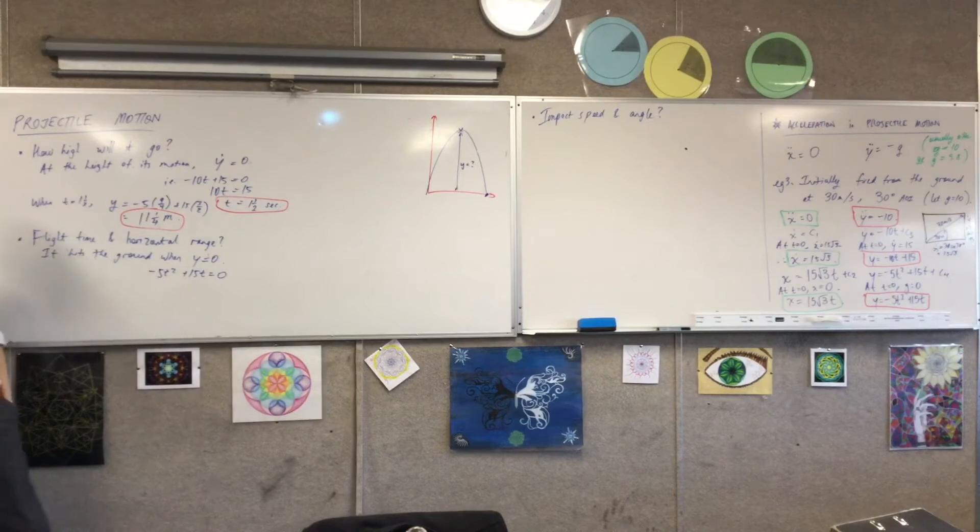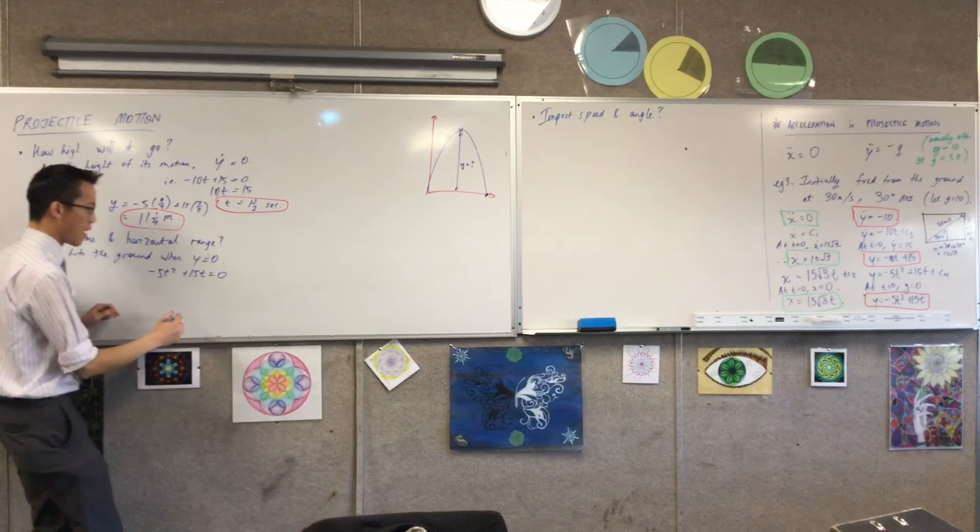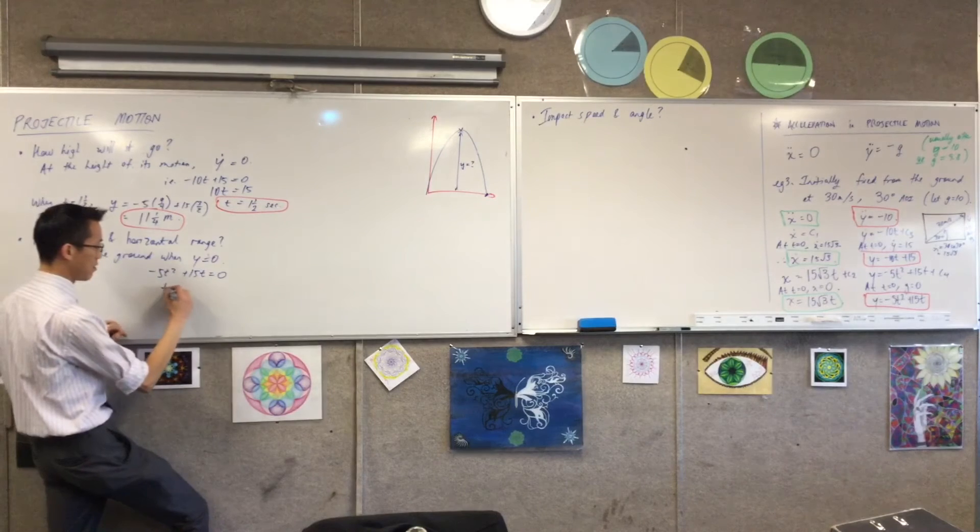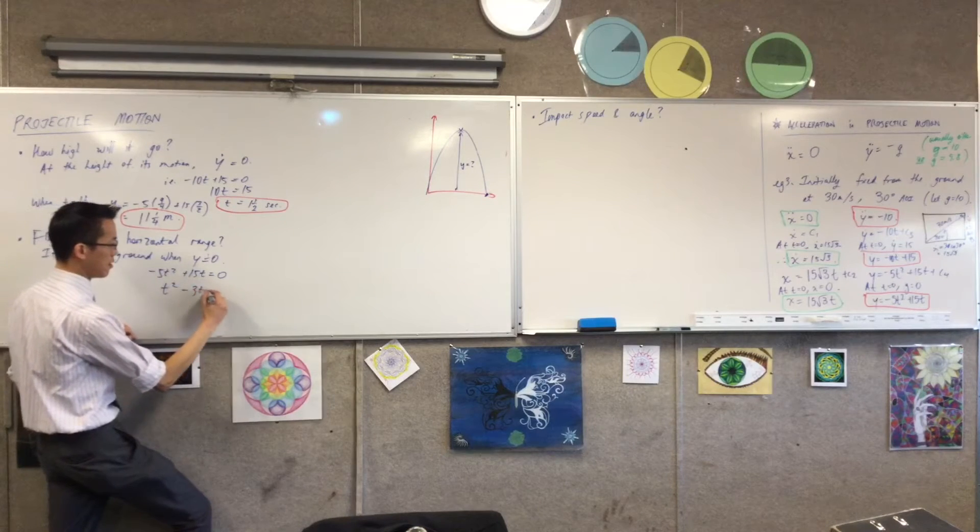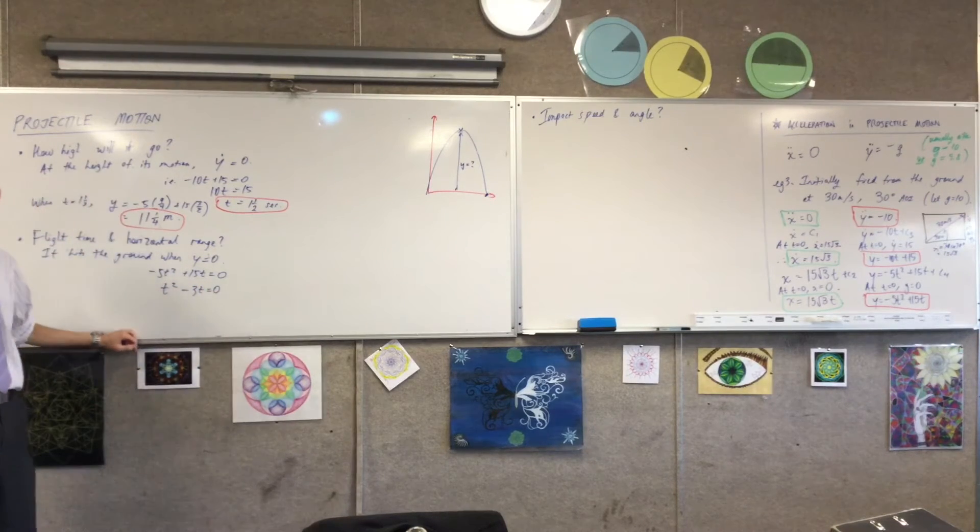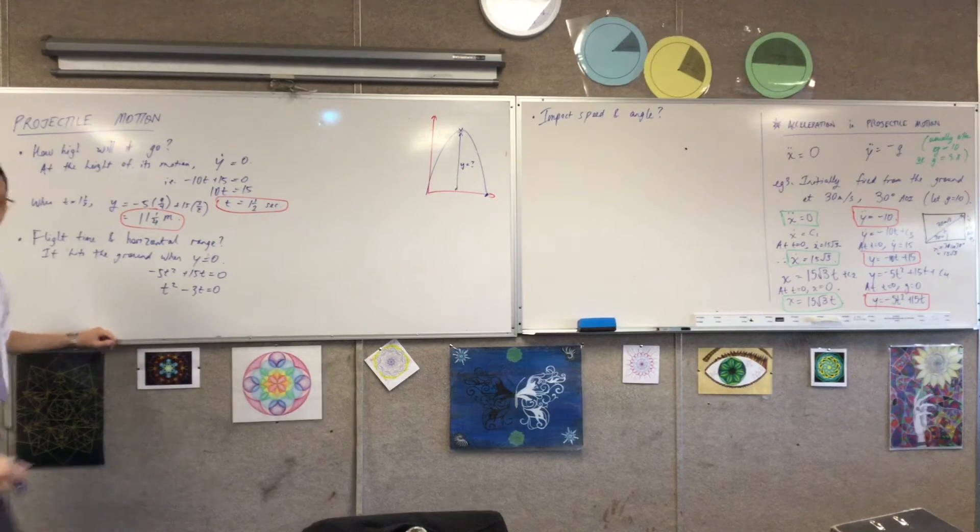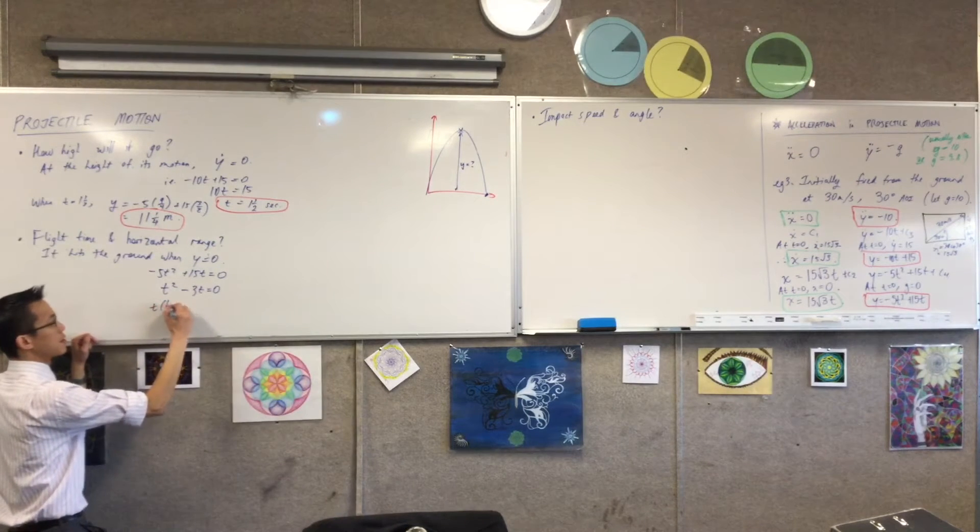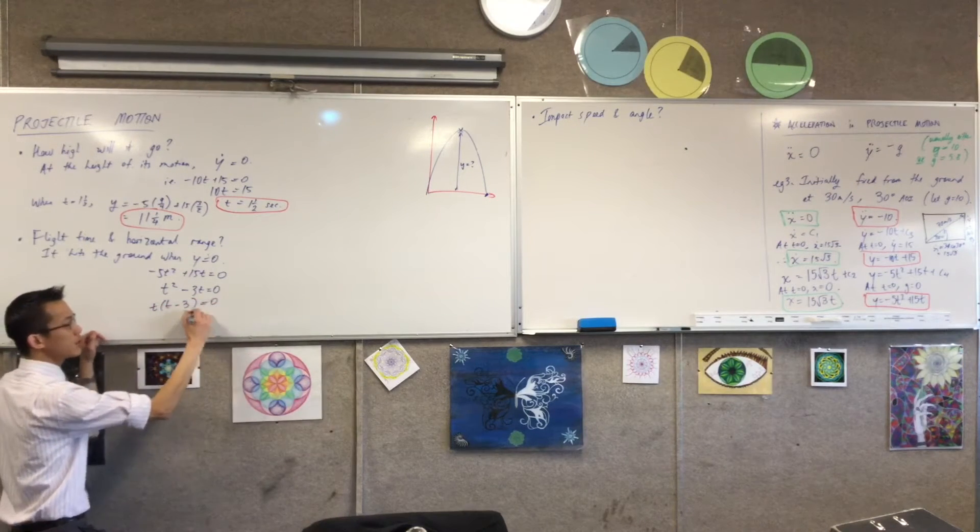What would you like me to do? I can divide through by negative 5. That'd be nicer. Now what? I'm going to factorize and I have two solutions to this.